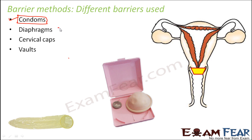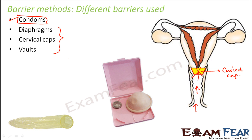Here you also see other barriers like diaphragms, cervical caps, and vaults. All of them are made up of rubber and are inserted into the female reproductive tract. They can be reused over and again and they block the entry of sperm. This is the female reproductive tract — this is the place from where the penis enters inside, and this is the area where the sperms are ejaculated. But here you have a cap, which is the cervical cap, and this cap will block the entry of sperms inside, so the sperms will not be able to enter. That is how there can be no fusion.